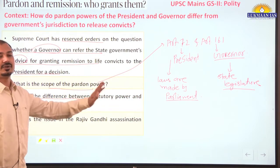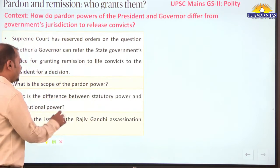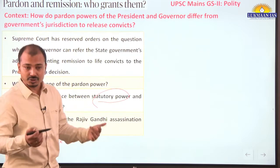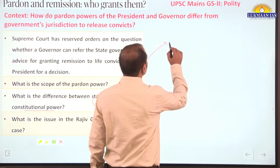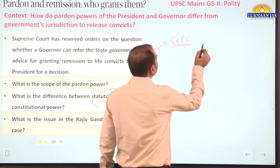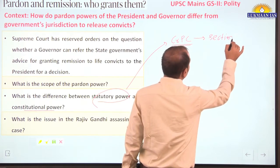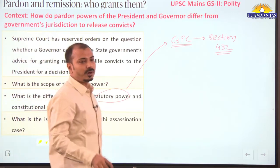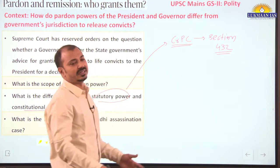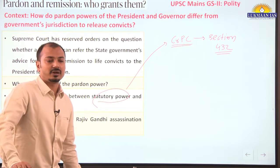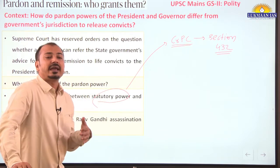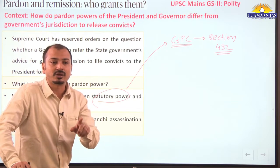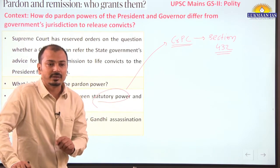These differences are given in M. Laxmikanth, which we all read for prelims examination. Statutory powers are also given under CrPC — Code of Criminal Procedure. CrPC Section 432 deals with remission of different sentences. There can be complete or partial remission of sentence, and the convict can be released from jail by different governments — central government or state government. The question here is not of President and Governor.